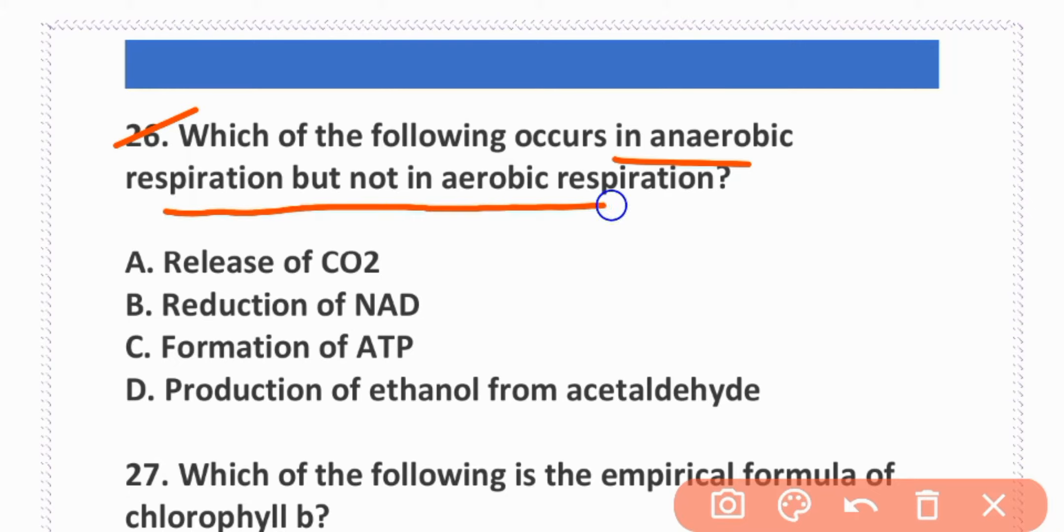Which of the following occurs in anaerobic respiration but not in aerobic respiration? Production of ethanol from acetaldehyde. Option D is correct.